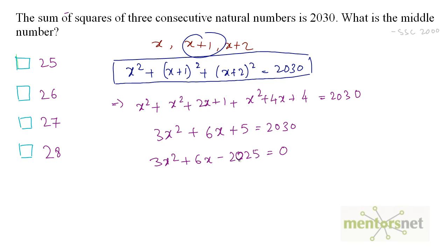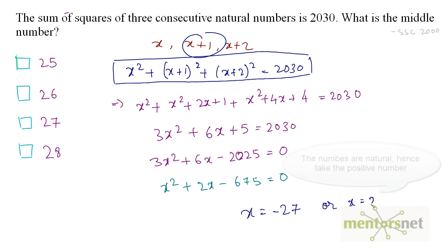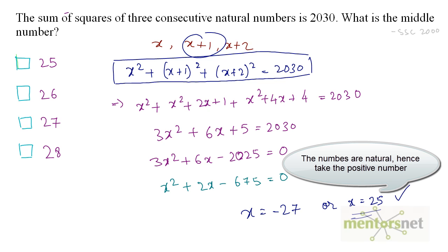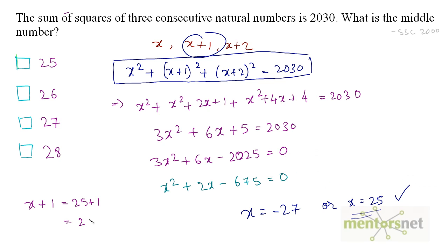We can divide the whole equation by 3, since all terms are divisible by 3, giving x² + 2x − 675 = 0. Solving this quadratic equation, the roots are x = −27 and x = 25. Since we need a natural number, x = 25. The middle number is x + 1 = 25 + 1 = 26. You might mistakenly mark option A, but the right answer is option B, because we need the middle number.